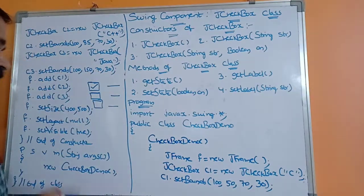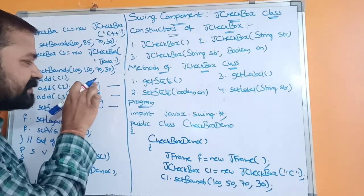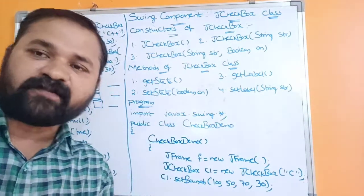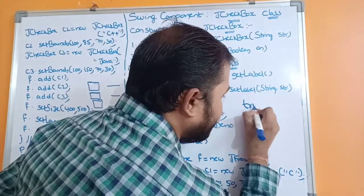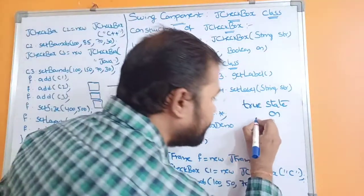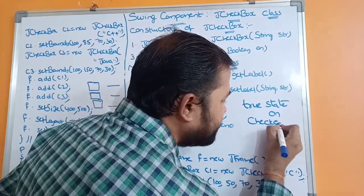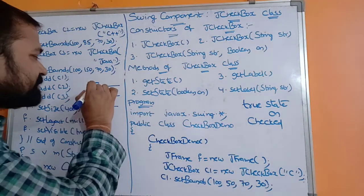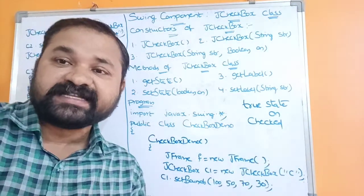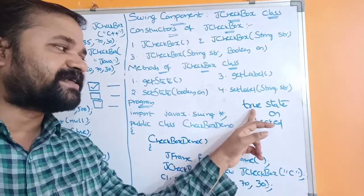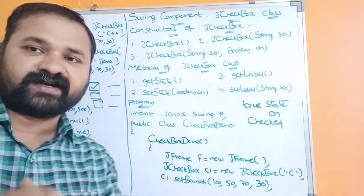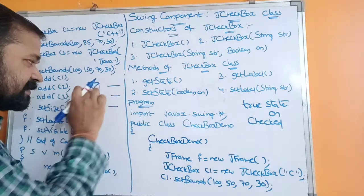If you select the checkbox then a tick mark will appear in it. If you select it again, the tick mark will disappear. When the checkbox contains a tick mark, it is called the true state — also referred to as the 'on' state or 'checked' state. So whenever there is a tick mark symbol in the checkbox, the state of the checkbox is true or on.